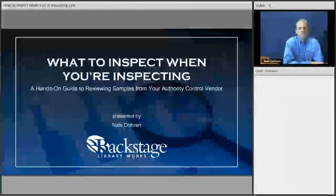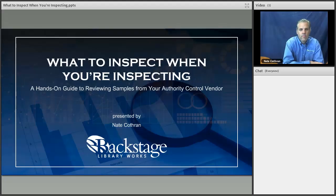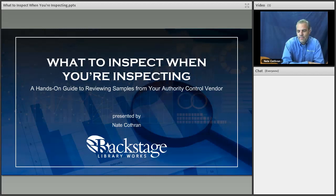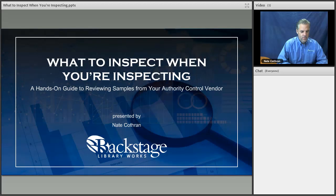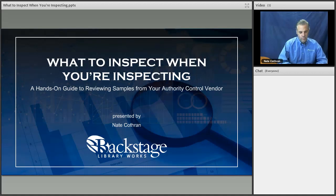I'm Bethann Goodwill, Backstage Account Manager for the Lower Midwest and Southern United States. I have the pleasure of introducing today's presenter. Nate Cothran is President of Backstage Library Works. When he first signed on for this webinar, he was the Vice President of Automation Services. As VP, Nate built a team providing authority control and other automation processes to Backstage clients. He brings a strong understanding of consumer needs, supervisory experience, and knowledge of the library automation industry. During his 16 years with us, Nate has been responsible for automation projects including Marcadia record matching, barcode creation, authority control, internal software development, hardware maintenance, and RDA enrichment. Nate is also a certified project management professional.